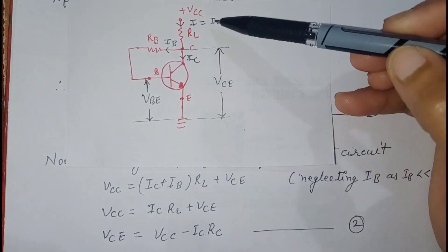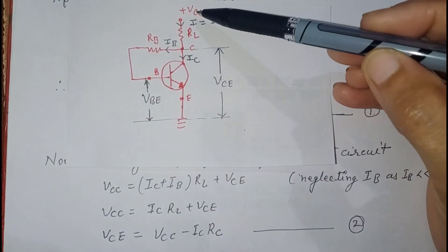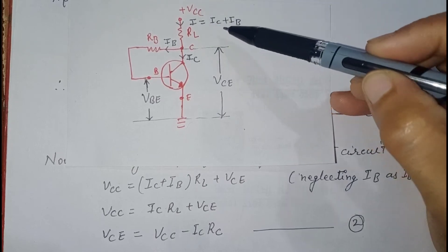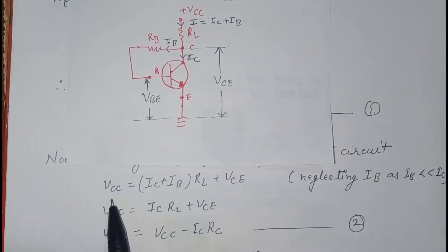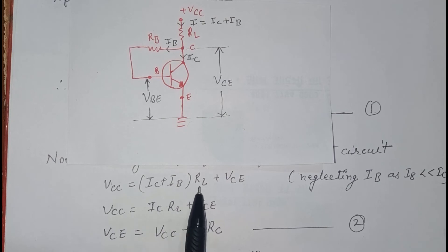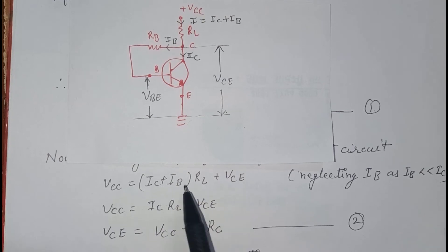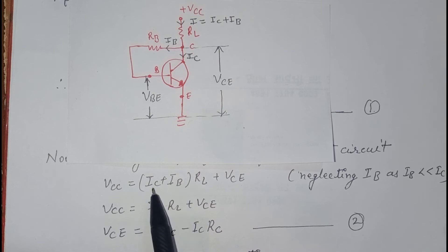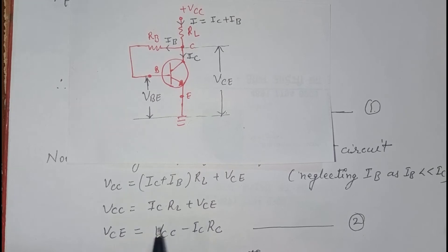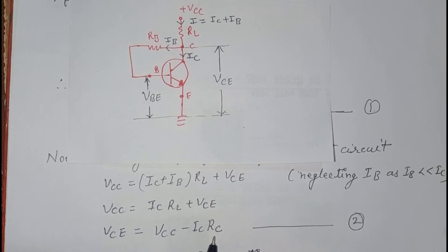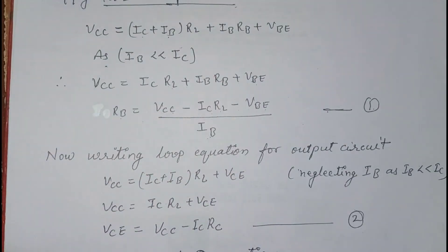Now we will write the loop equation for the output circuit. The loop equation for the output side is: VCC = (IC + IB)·RL + VCE. Since IB is much less than IC, we can neglect IB. The equation becomes: VCC = IC·RL + VCE. Rearranging: VCE = VCC − IC·RC. We will mark this as Equation 2.